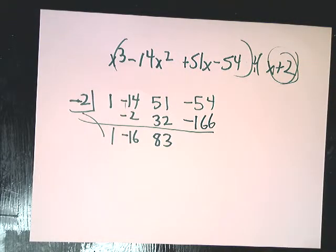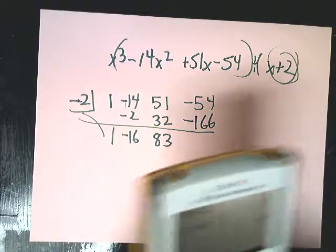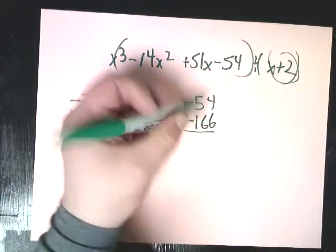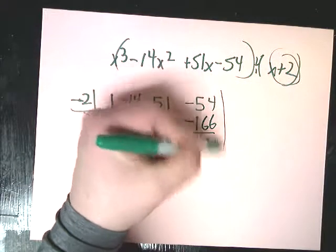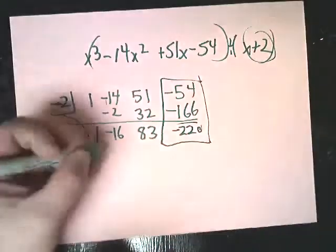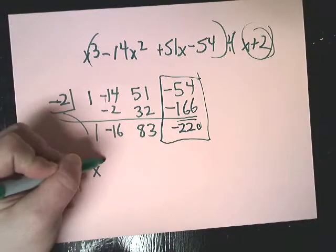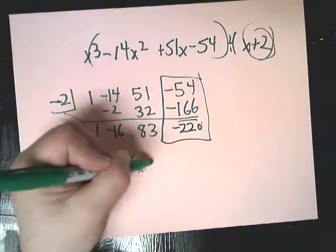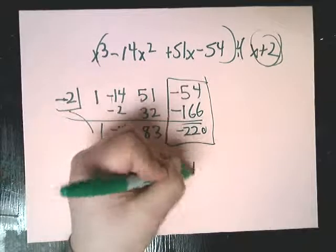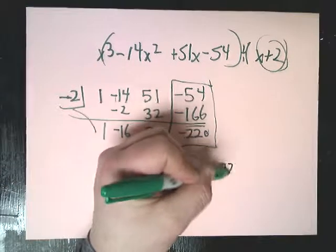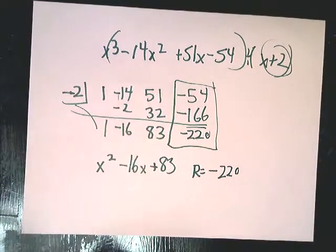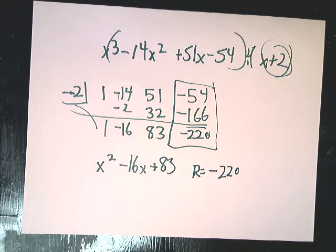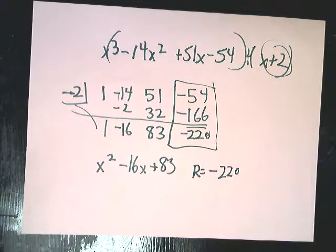And from that point, you do a little combination of those two things. You get negative 220. Now in this case, here's my remainder. So my final answer is x squared minus 16x plus 83 with the remainder of negative 220. So it does happen. Occasionally you'll get a nice remainder on there. I just want to show you that that actually existed. And that's it.